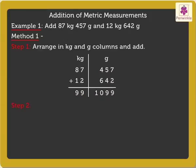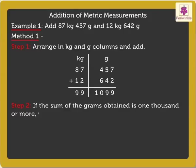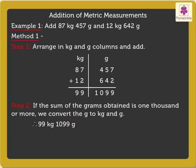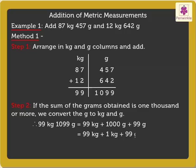Step 2: If the sum of the grams obtained is 1000 or more, we convert the grams to kilograms and grams. Thus, on converting 1099 grams, we get 99 kilograms plus 1000 grams plus 99 grams, which equals 99 kilograms plus 1 kilogram plus 99 grams, which equals 100 kilograms 99 grams.